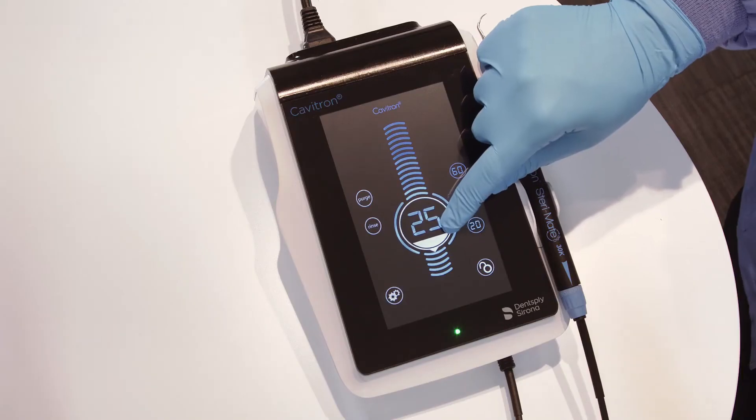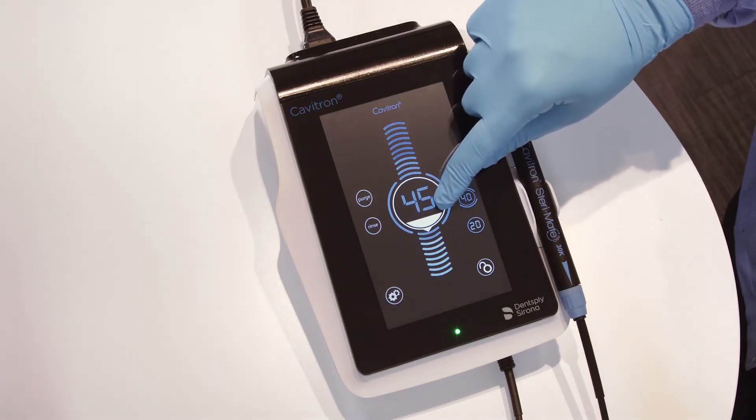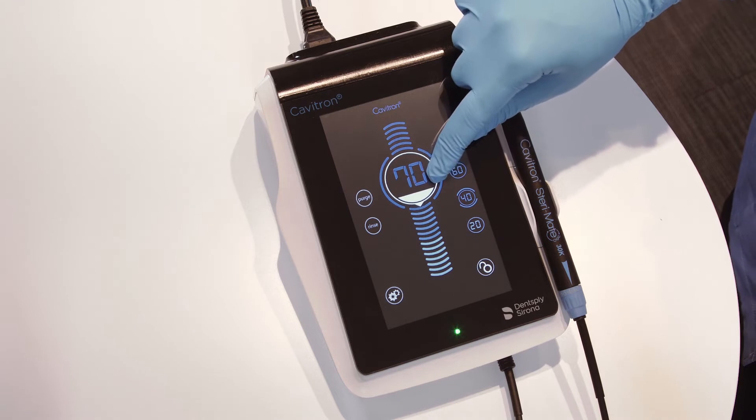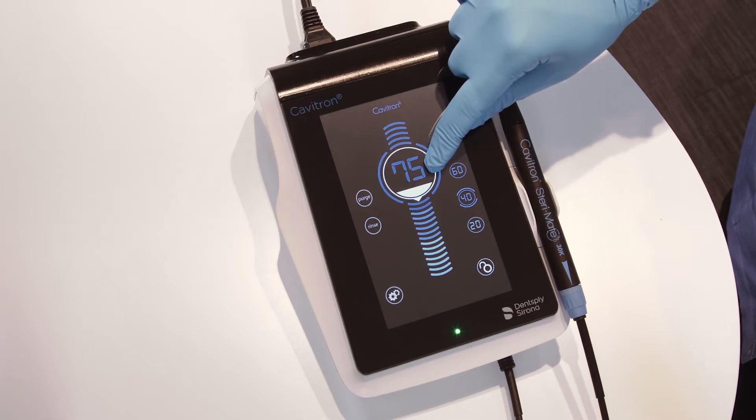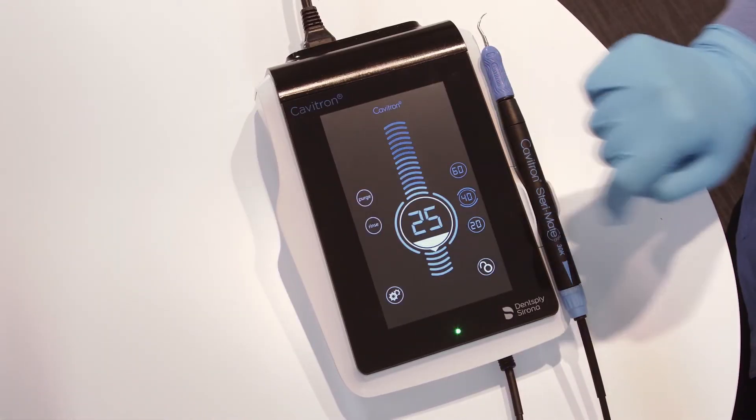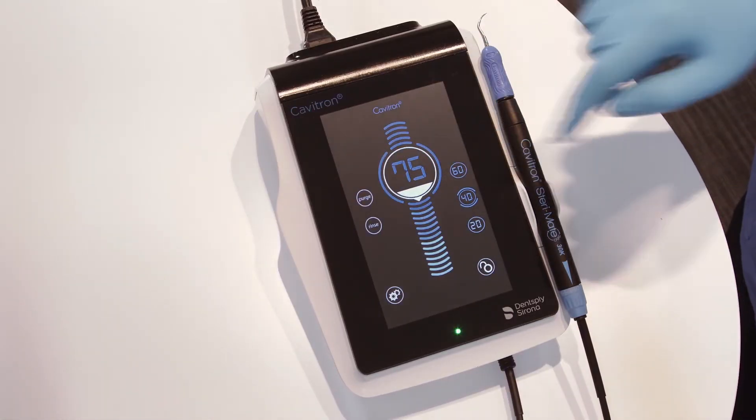To control the ultrasonic power level, simply slide to select your desired power level. Sliding up increases the power, while sliding down decreases the power. A power level may also be selected by tapping the desired position on the power scale.